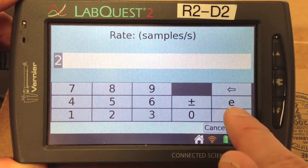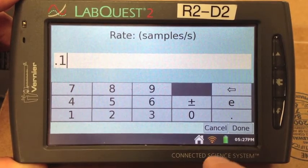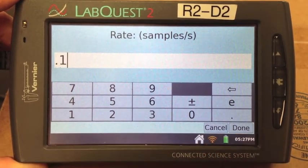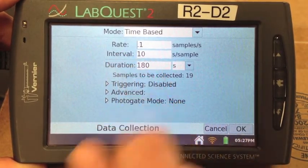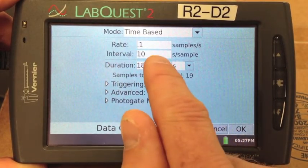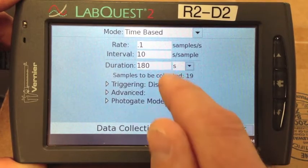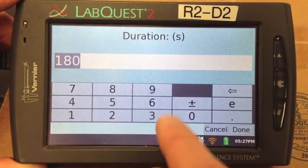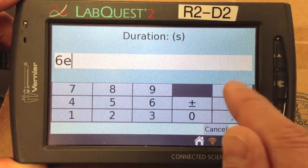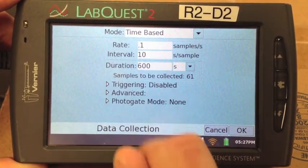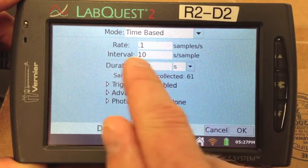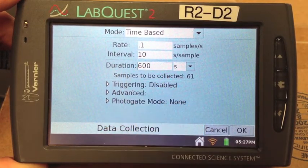Rate, let's just collect 0.1 samples per second. So that means it's going to take 10 seconds to take a sample, which is shown in the interval here. And change the duration to 600 seconds, which is 10 minutes. So 0.1 samples per second, which is 10 seconds for every sample, and 600 seconds.